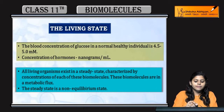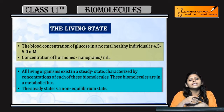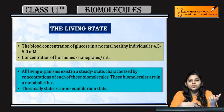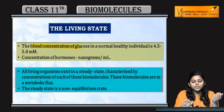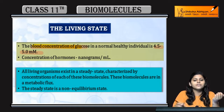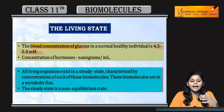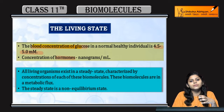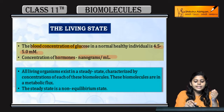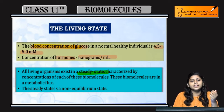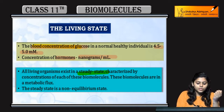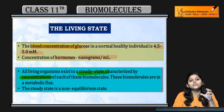The next topic is The Living State. In a normal healthy individual, blood glucose concentration is 4.5 to 5 millimolar, and the concentration of a hormone is calculated in nanograms per milliliter. A healthy individual is in a steady state, which is characterized by the concentration of biomolecules present in a living being.